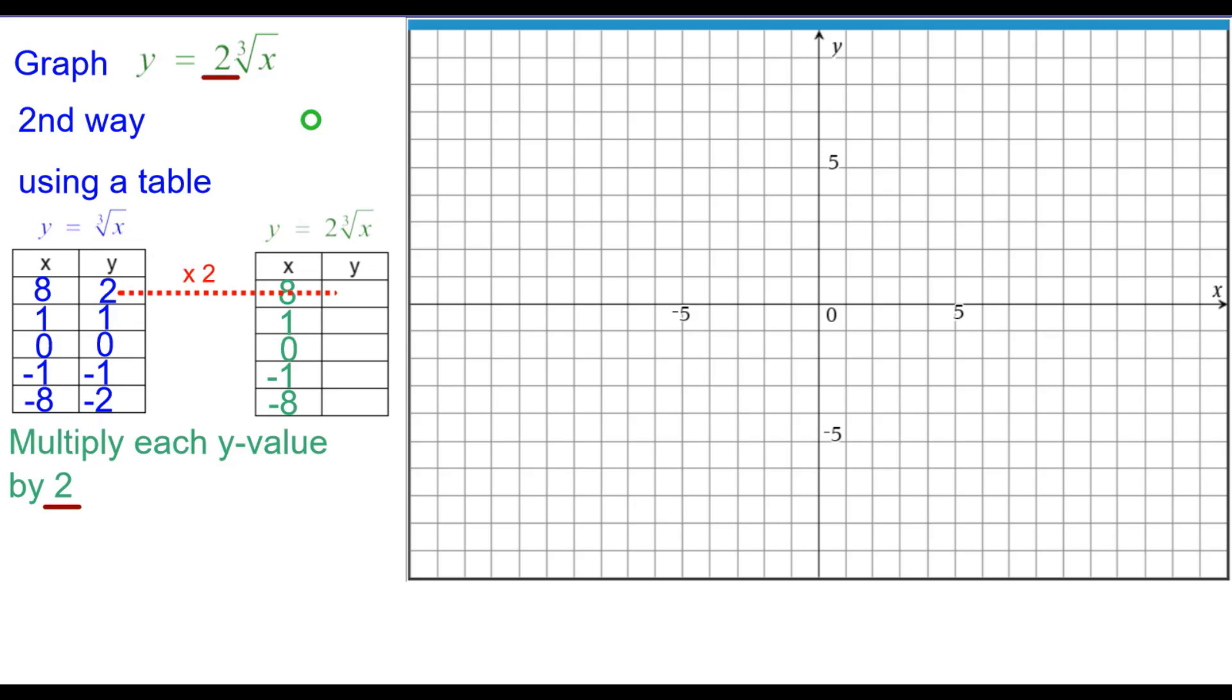What we need to do is multiply each y value by 2 because of the coefficient there. So 2 times 2 is 4, so 8 comma 4. 1 times 2 is 2, 1 comma 2. The origin is not affected here by the 2 factor. Negative 1 times 2 is negative 2, negative 1 comma negative 2, and then negative 8 comma negative 4.